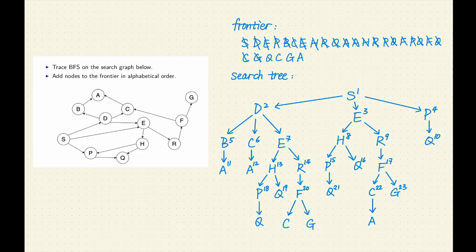Let me make some observations. First, BFS explores the search tree level by level until it finds a goal. Second, the order of adding nodes to the frontier determines the order of exploring the nodes in each level. Since we added nodes to the frontier in alphabetical order, BFS explores each level in alphabetical order as well.